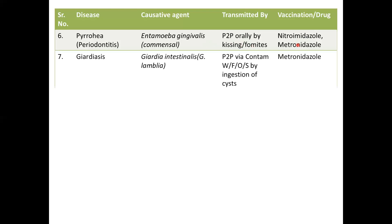Next is giardiasis, caused by the protozoan Giardia intestinalis — previously named Giardia lamblia, though many places still use that name. It is transmitted from person to person via contaminated water, food, or ingestion of the cysts. No vaccination is available; however, the drug metronidazole can be given.